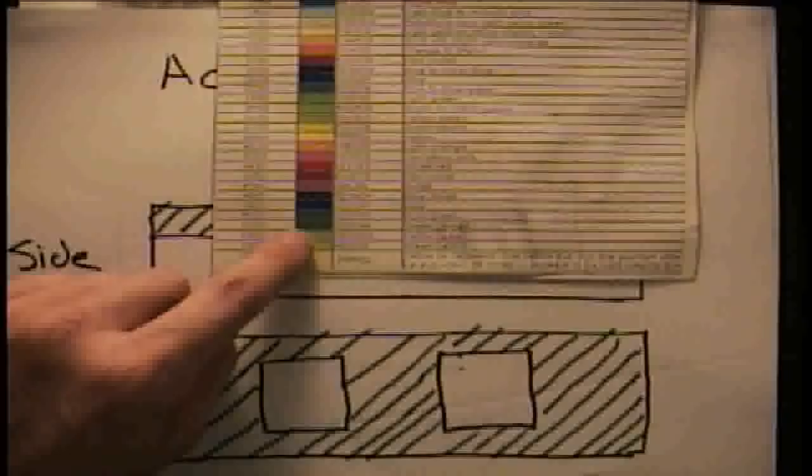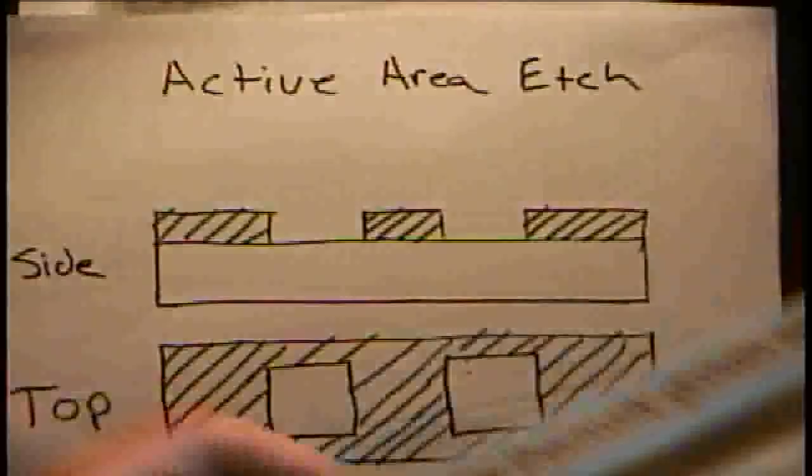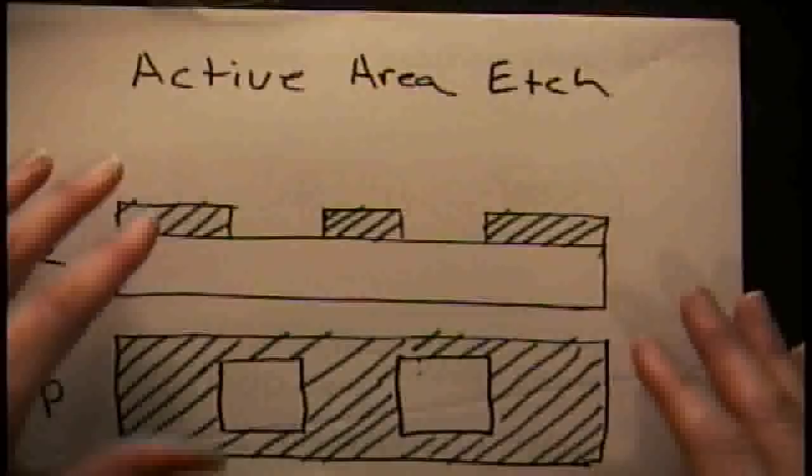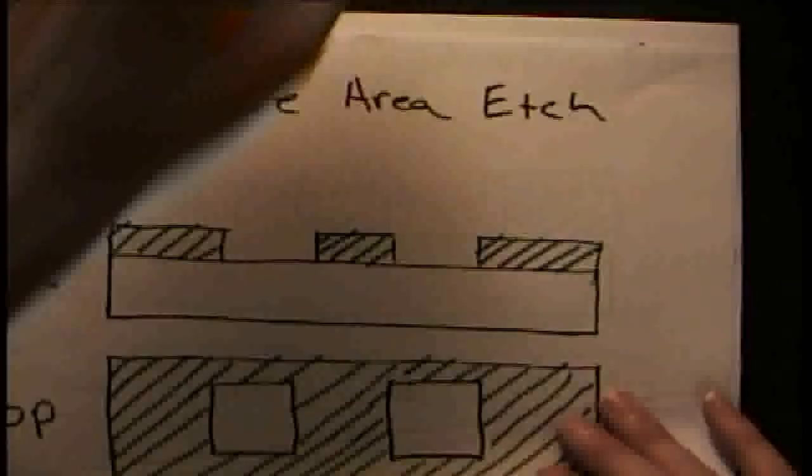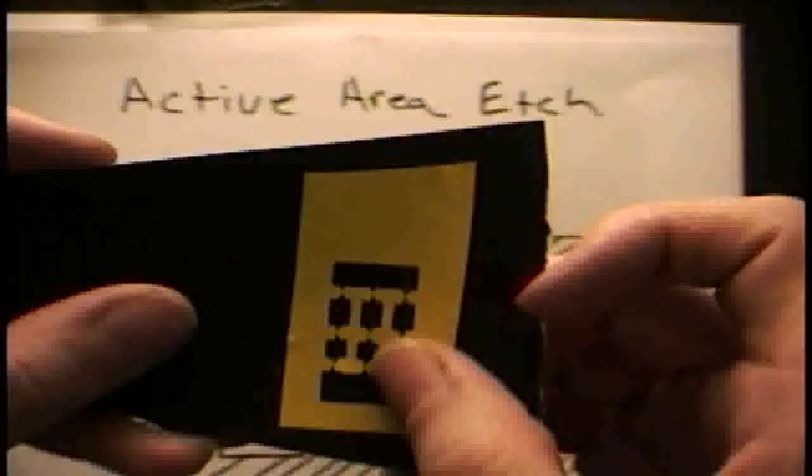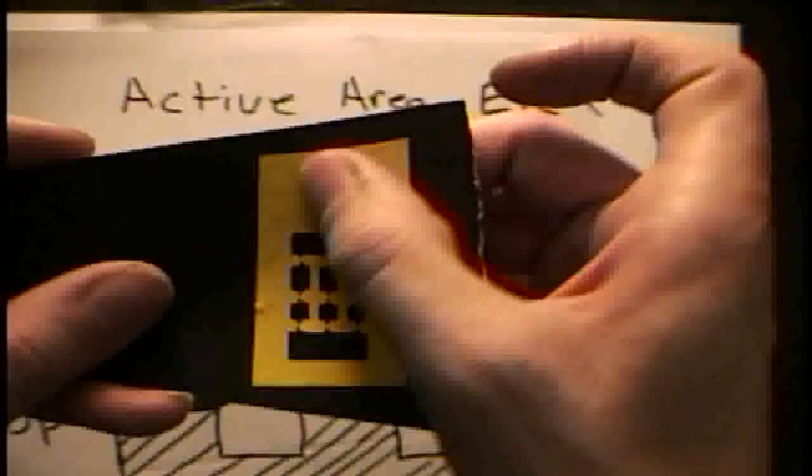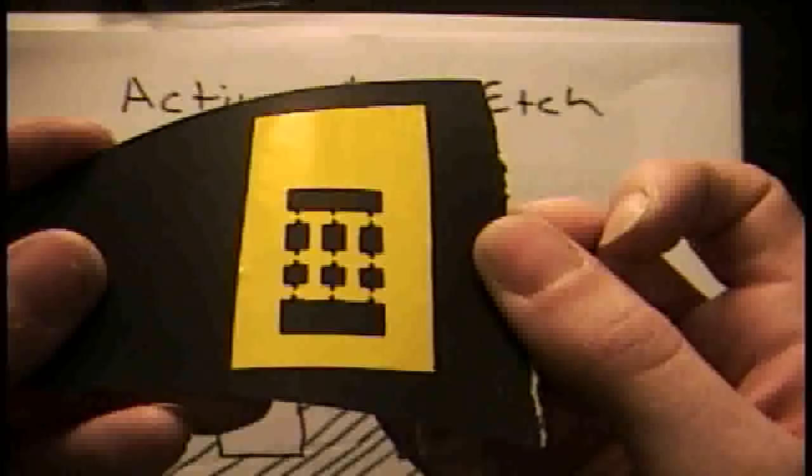The next thing you're going to do is etch the active layer. You're going to use hydrofluoric acid and a vinyl sticker mask that you can cut out. This is like the vinyl signs you can put on the side of your car. This is going to mask the oxide from the acid, and you're going to open up active areas into the wafer.